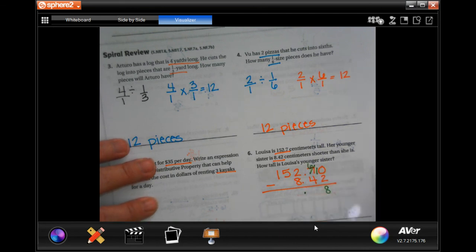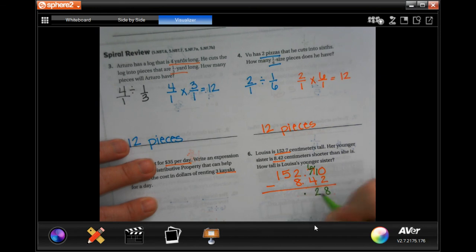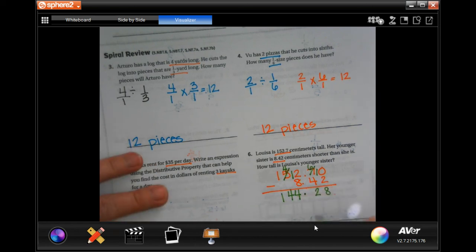Ten take away two is eight. Six minus four is two. Two cannot take away eight, so I'm going to make that a four, making this twelve. And twelve minus eight is four. I'm going to bring down my four and my one. So she is 144.28 centimeters.